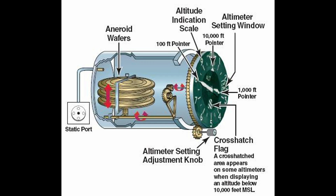We have to have a way to compensate for those pressure changes on the altimeter, because it's never constant even if you're maintaining the same altitude. So we have a way to calibrate the altimeter so that regardless of changing air pressure — whether a low or high pressure area is moving in — we can set it to show our true height above sea level. The altimeter always shows height above sea level when it's set properly.